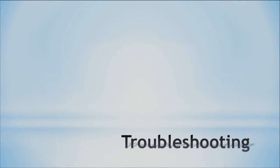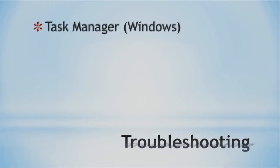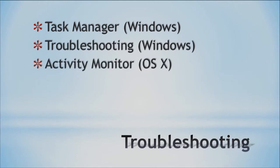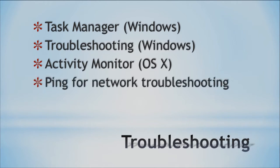Now let's look at troubleshooting. Troubleshooting is great because if you're having problems within your system, you can use these utilities to help figure out what's going on. In Windows you have the Task Manager, and also a built-in utility called Troubleshooting. In OSX, you can look at the Activity Monitor. If your internet connectivity is not working, you can use the ping command to help troubleshoot your networking problems. These utilities can help figure out why certain hardware is not working or why some application isn't responding. Become familiar with them so you know how they work and when to use them.